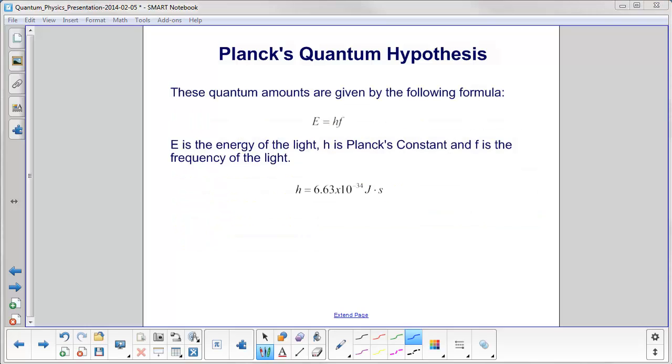These quantum amounts are given by the following formula. The energy that's allowed is equal to h, which is Planck's constant, and f, which is the frequency of the light. Now Planck's constant is very, very tiny. H is 6.63 times 10 to the minus 34th joule seconds.